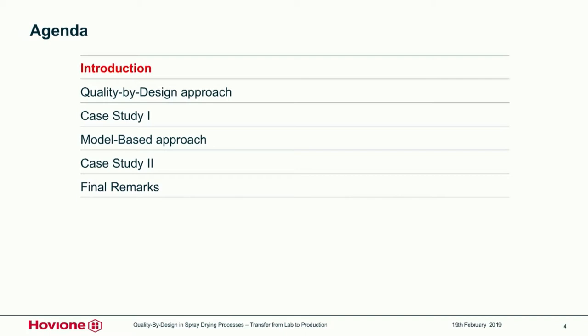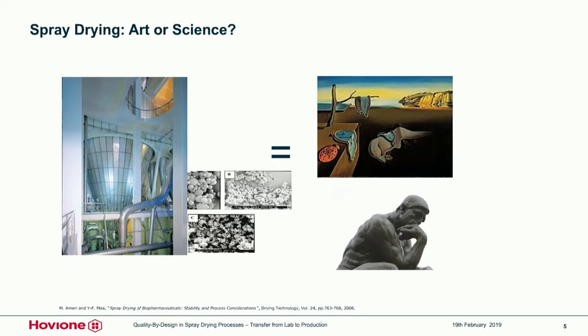One of the questions that often comes up is: is spray drying an art or is it science? Definitely in the past it was an art. What you see is a commercial milk spray dryer producing 10 tons of powder per hour — a bit out of the league for pharmaceuticals. You can see a small white person standing down there indicating the size of the spray dryer. But now, luckily, it's becoming more and more science, and we'll show you how you can apply the science to obtain smooth particles as well as more complicated morphologies using spray drying.